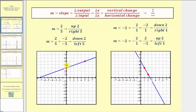From the given point, if we move up two units and right five units, we find a second point on the line. Once we find the second point, we can graph the line. But we can also view the slope of two-fifths as negative two over negative five, since a negative divided by a negative is positive.